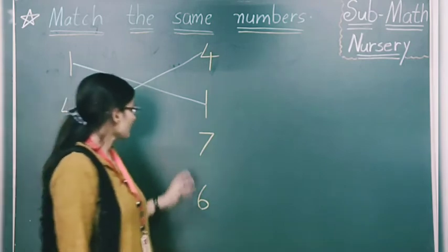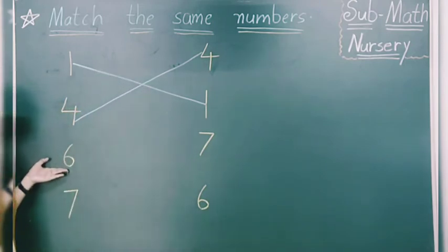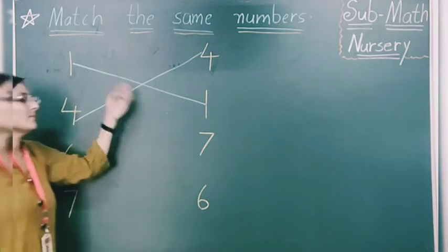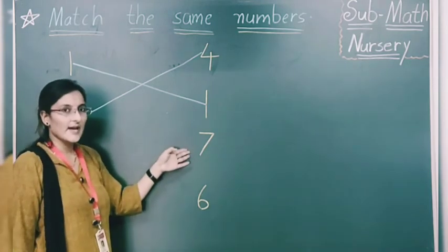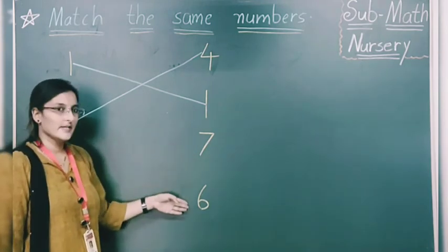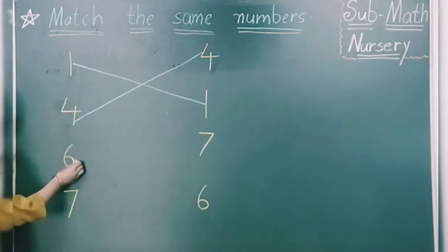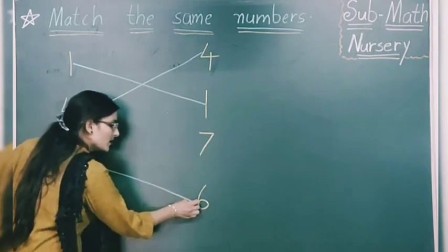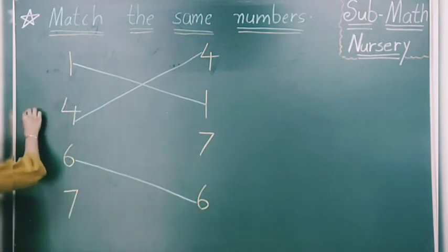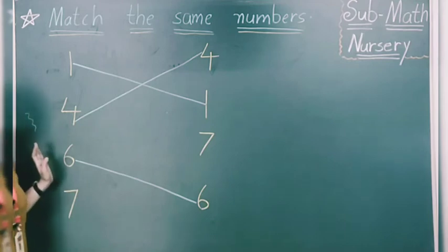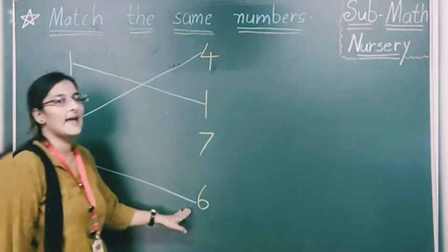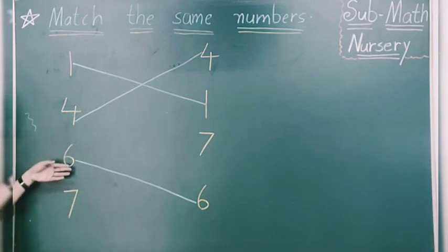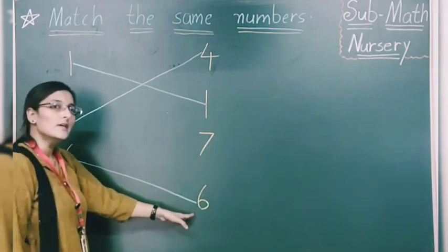Now look at this number. Which number is this? Number 6. You have to find the same number here. Is it 6? No. Is it 6? Yes. So we have to draw a line from 6 to 6. You have to draw a straight line like this. We have matched number 6 to 6.